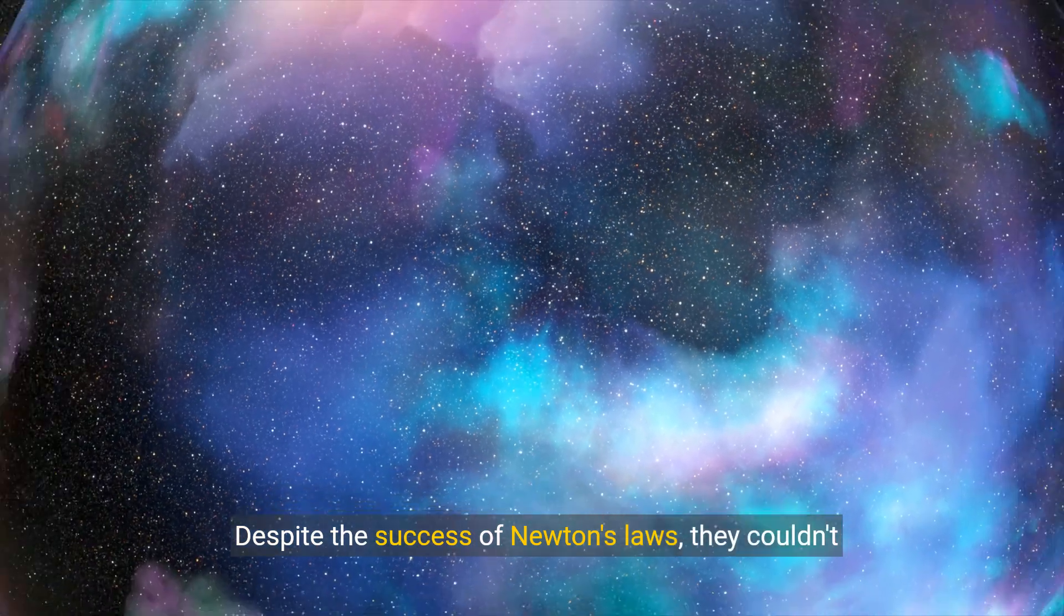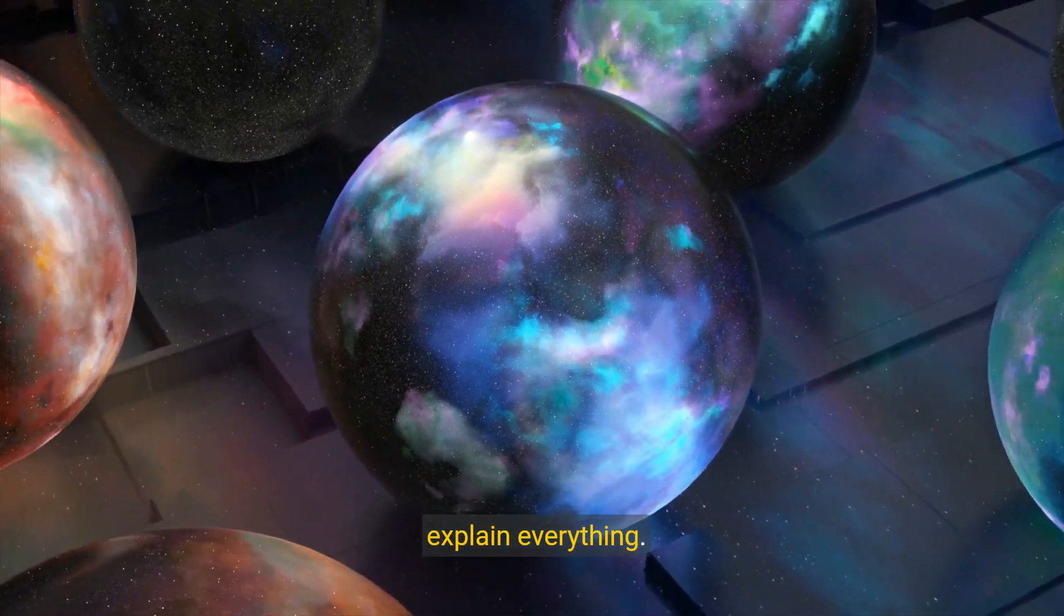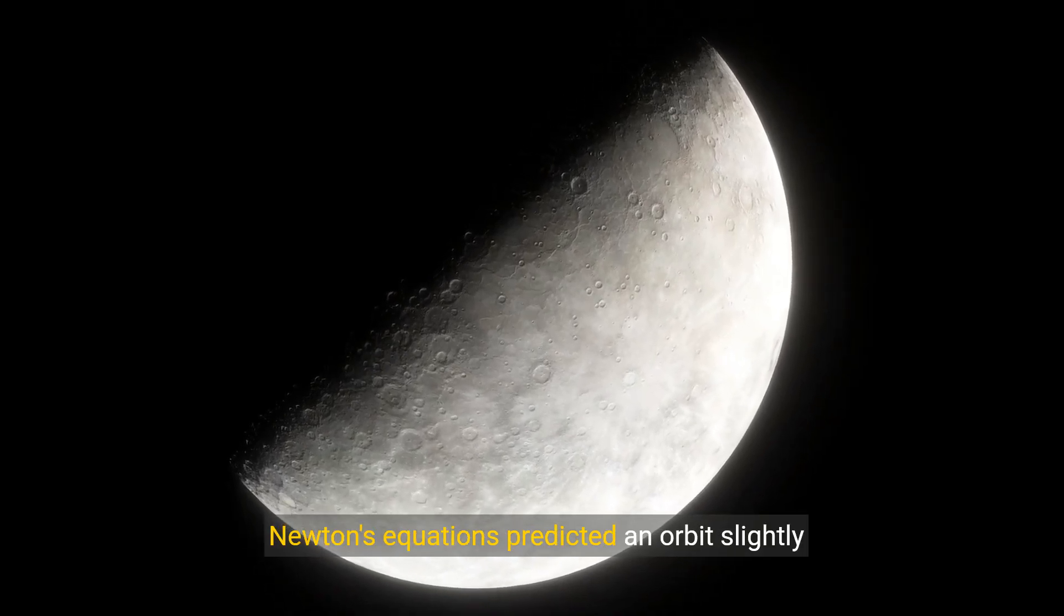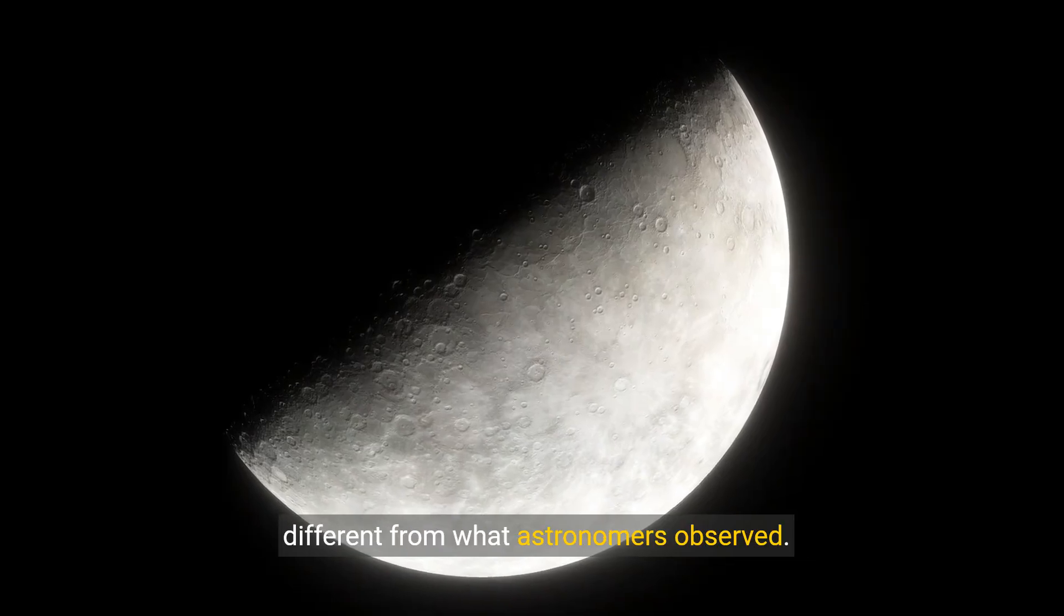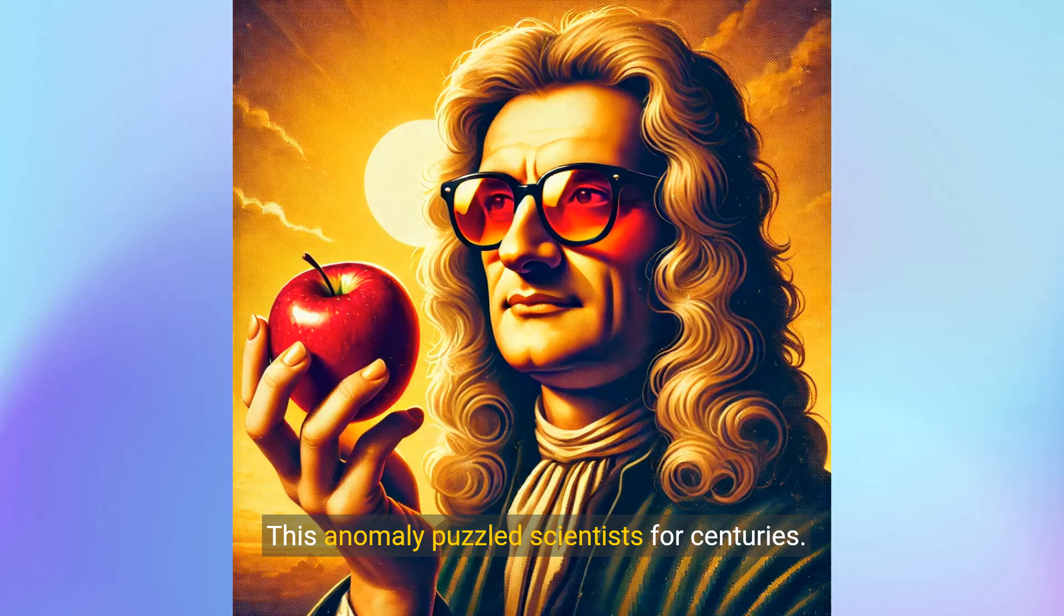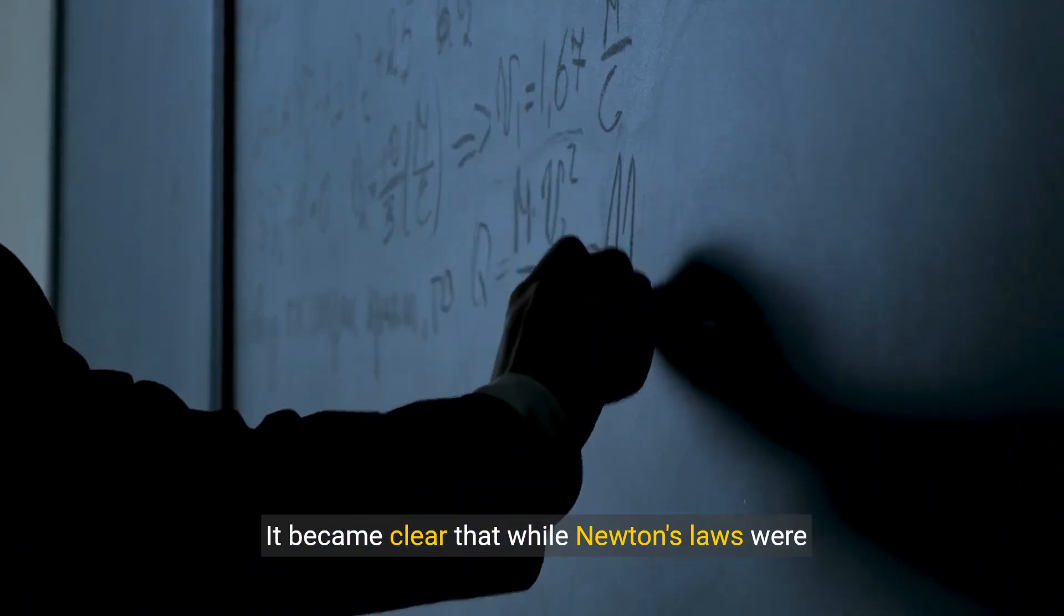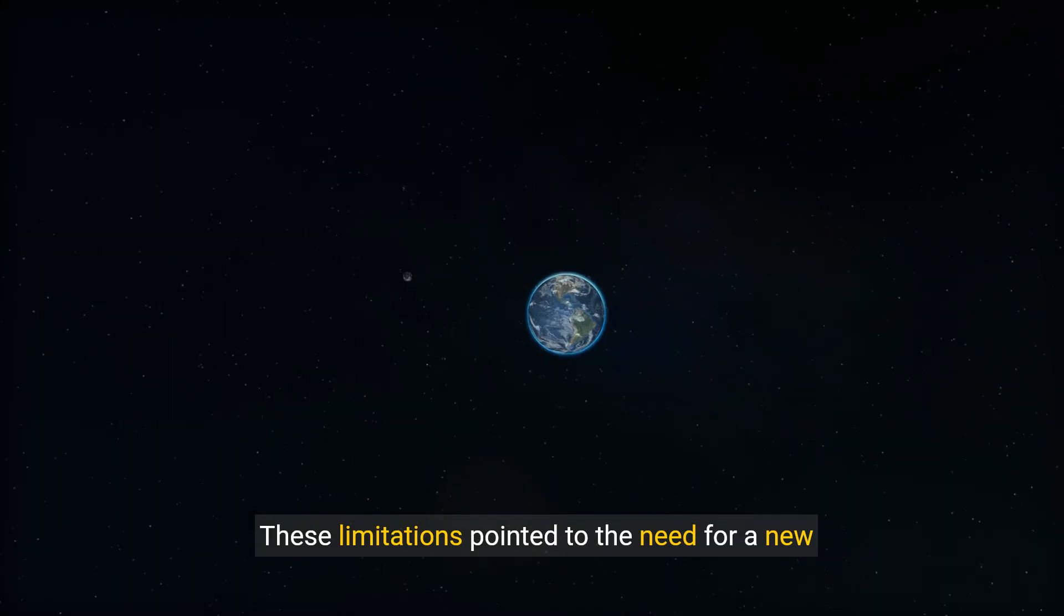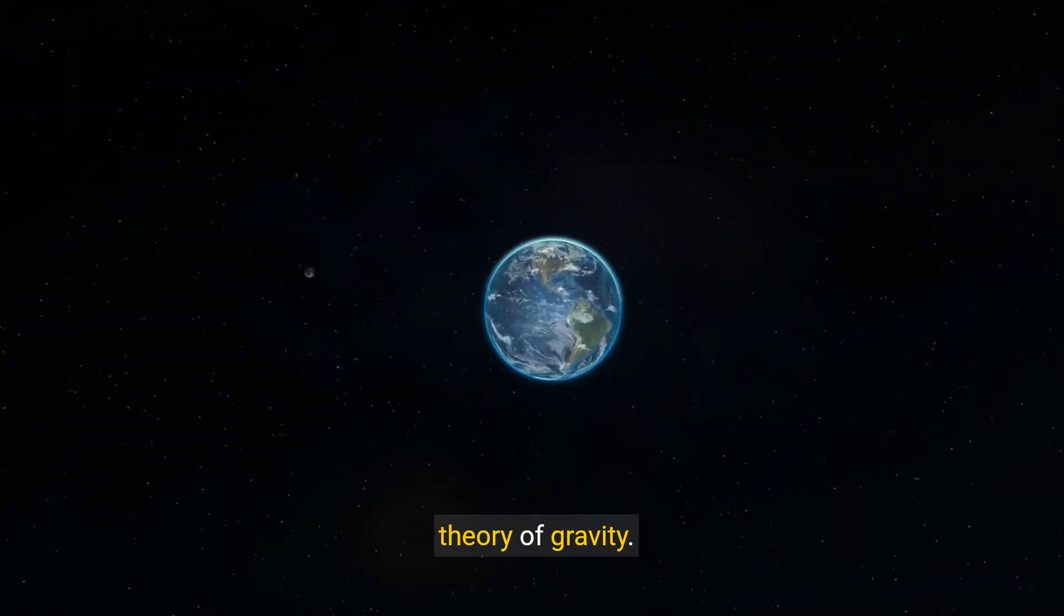Despite the success of Newton's laws, they couldn't explain everything. Take Mercury's orbit, for instance. Newton's equations predicted an orbit slightly different from what astronomers observed. This anomaly puzzled scientists for centuries. Furthermore, Newton's laws couldn't account for gravitational waves, ripples in spacetime that were theorized but remained unexplained. It became clear that while Newton's laws were fundamental, they had limitations. These limitations pointed to the need for a new theory of gravity.